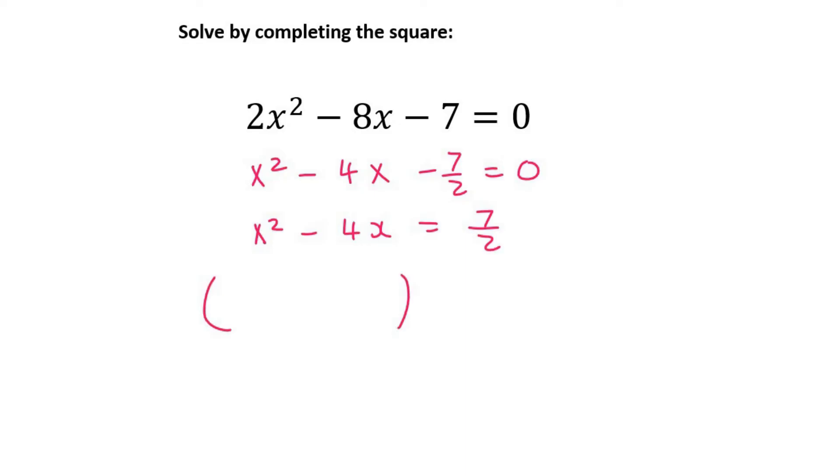Then what I do is I open up a bracket, and I divide this number by 2. So that's going to be 4 divided by 2 squared. Then on the other side, I've got 7 over 2, and then I say plus. Then I open up a bracket to the power of 2, and I put whatever this number is inside there. There we go. That's the difficult part. Now it's easy.